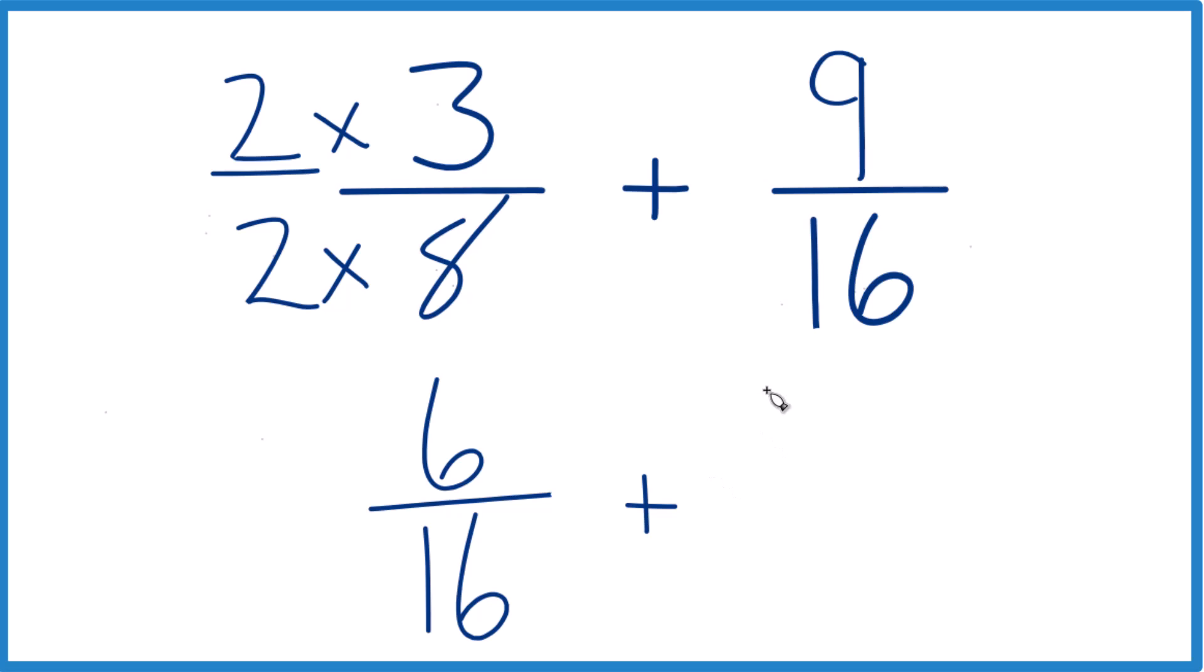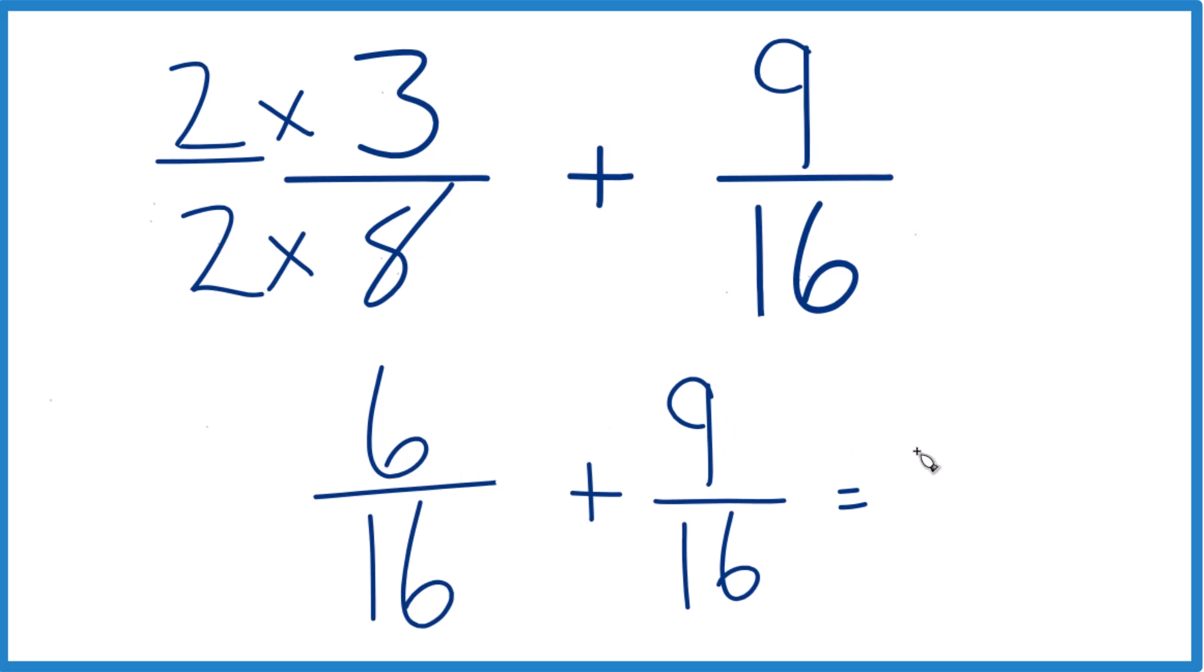We can add our 9 sixteenths here, and remember, we have the same denominators, so add the numerators, 6 plus 9, that's 15, and then we just bring the denominator across, the 16 across.